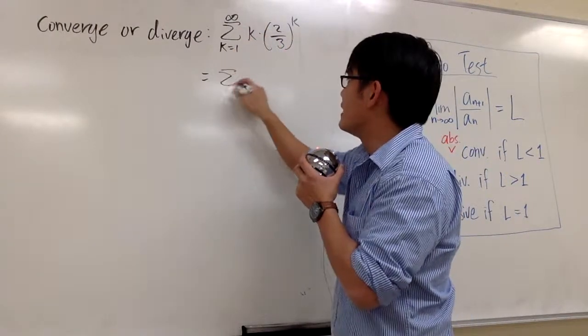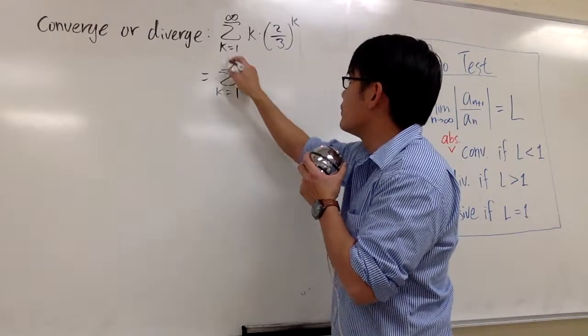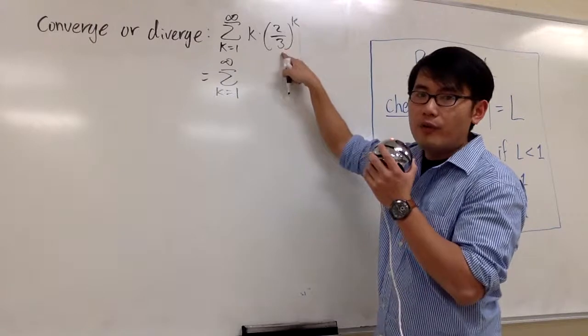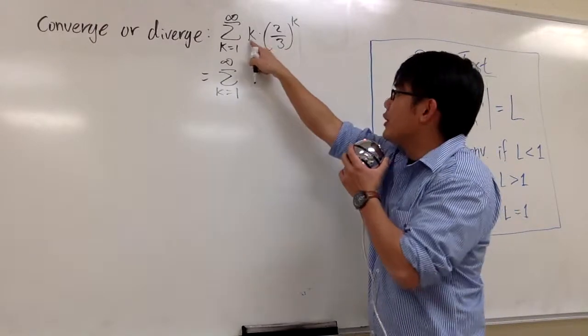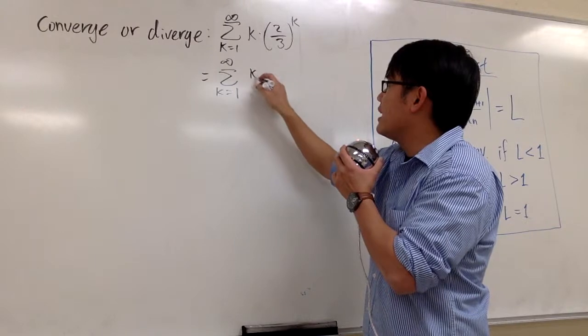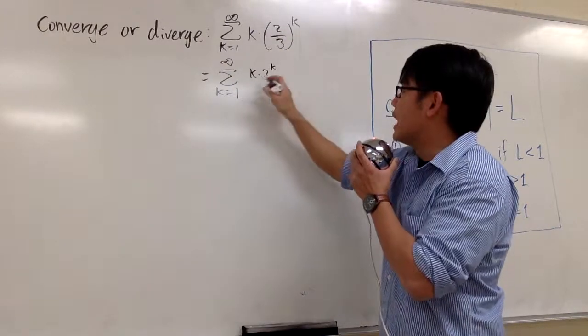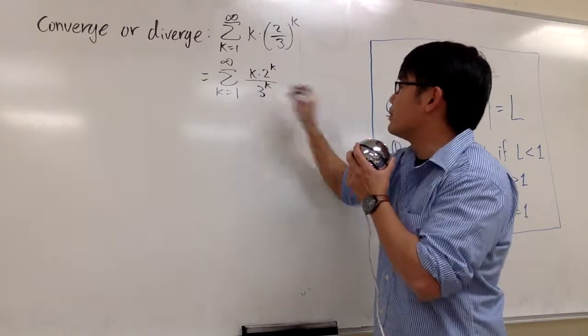This is the same as saying sigma when k goes from 1 to infinity, I will put down 2 to the k over 3 to the k. And on the numerator I have this k right here as well, so let me put down k times 2 to the k, altogether on the numerator, and then the denominator is 3 to the k.